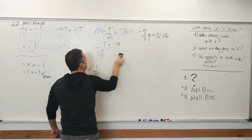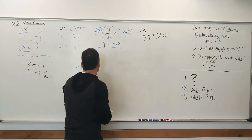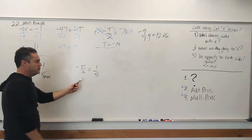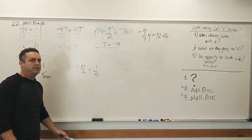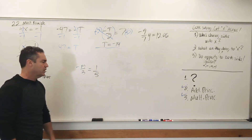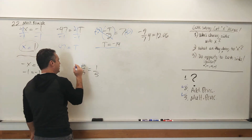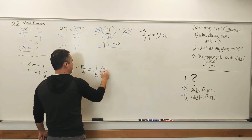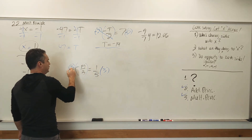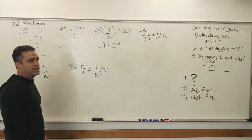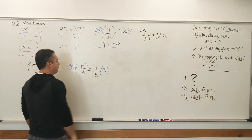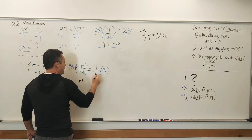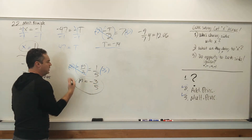For negative M over 3 equals one fifth: who's sharing sides with M? Negative and 3. It's being divided, so multiply. But that wouldn't get rid of the negative. So multiply both sides by negative 3. These cancel, the negatives cancel, M is now alone. M equals negative 3 fifths.